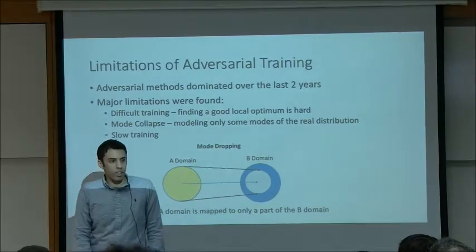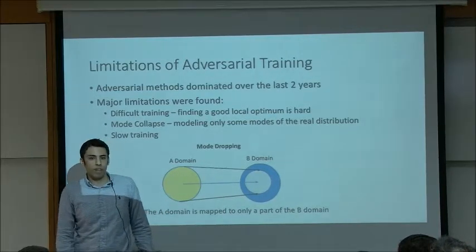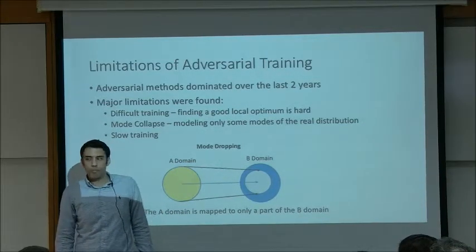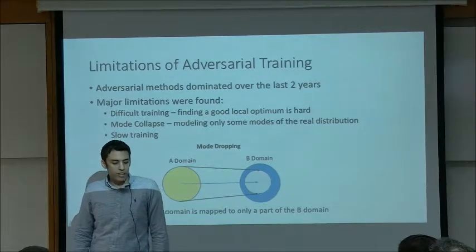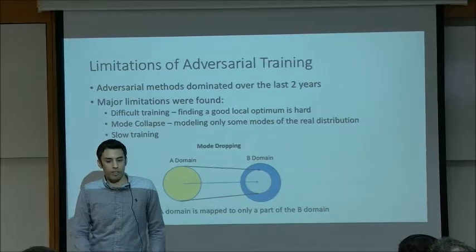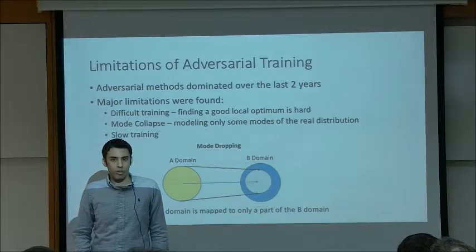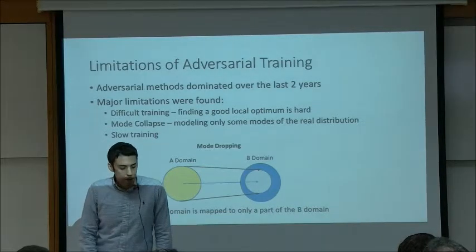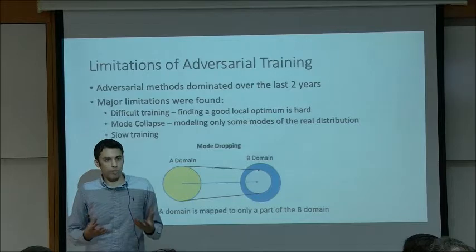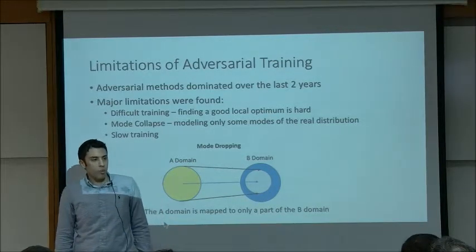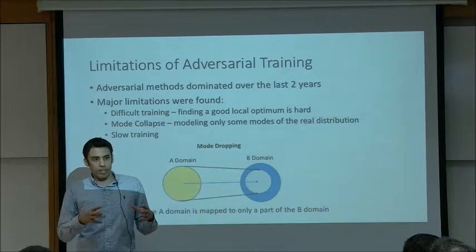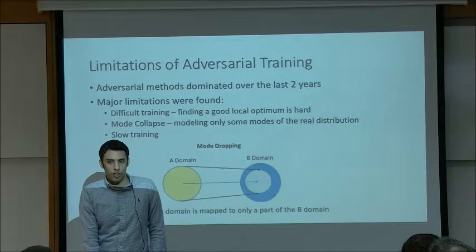These techniques have dominated the field of unsupervised analogies for the last two years. However, major limitations of these methods have been found. The first is difficult training — it is quite difficult to find a good optimum for adversarial methods, and this is not yet solved. The other problem is mode collapse: adversarial methods can only map some parts of the distribution, not all of it. The A domain may be mapped into only a part of the B domain — this is called mode dropping. The other issue is slow training.